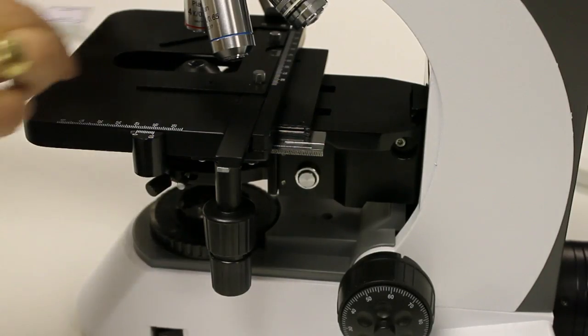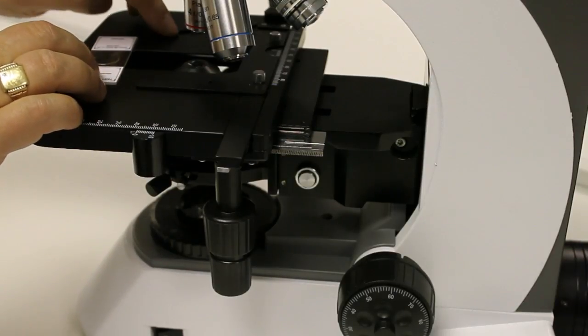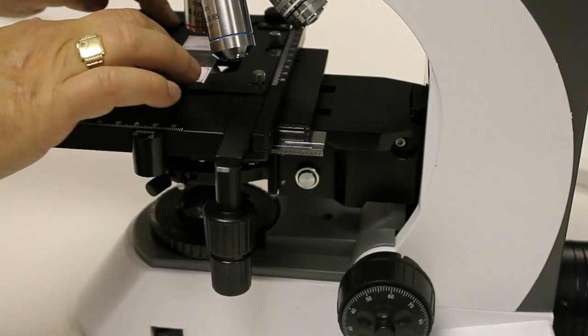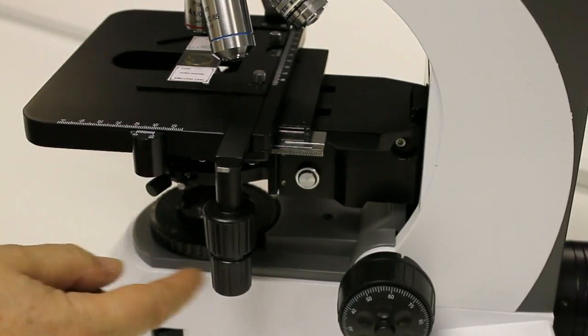Okay, now let's go through some of the controls. The slide simply sits on the stage, and you can see that arm is spring loaded. You locate it on the stage and let the arm hold it in place.